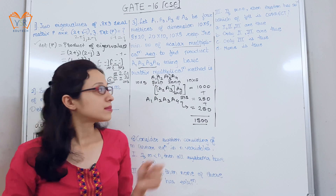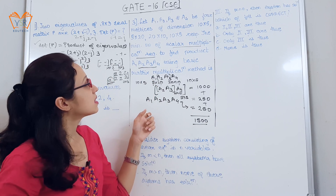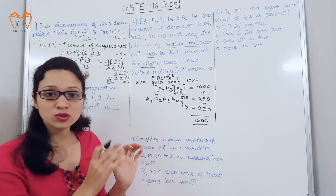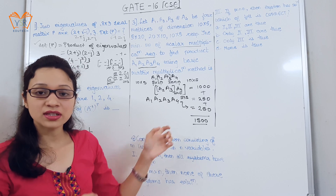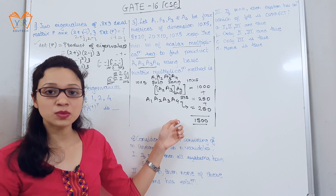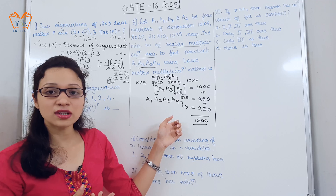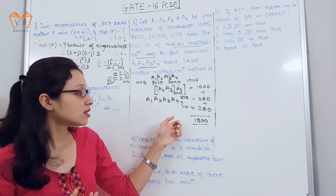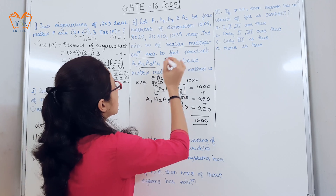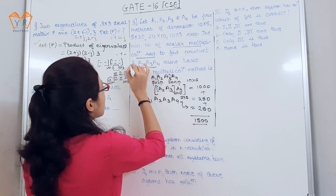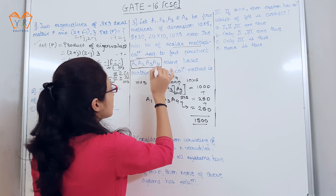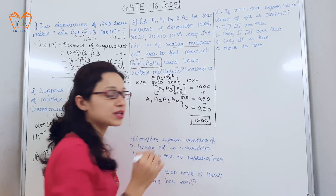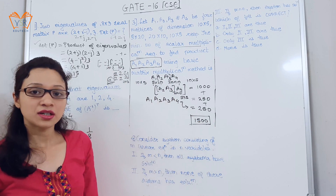The key takeaway from this example is that the intermediate resulting matrix should be kept small in size, so the number of scalar multiplications required is minimized. For the product A1·A2·A3·A4, the minimum number of scalar multiplications required is 1500.